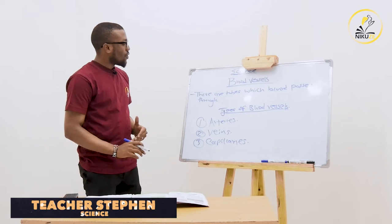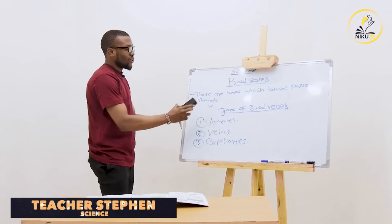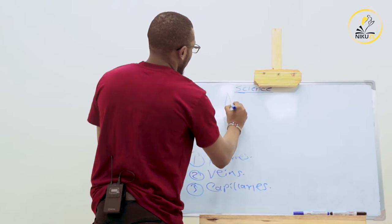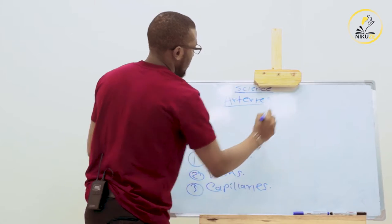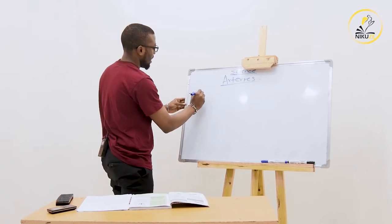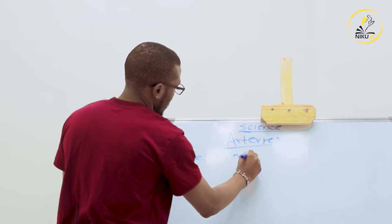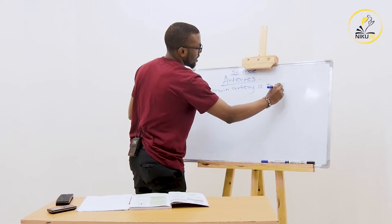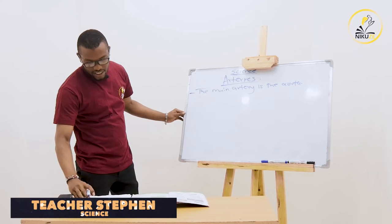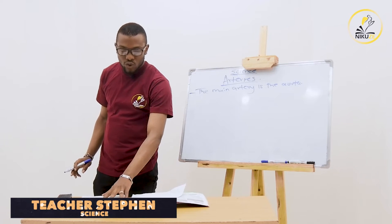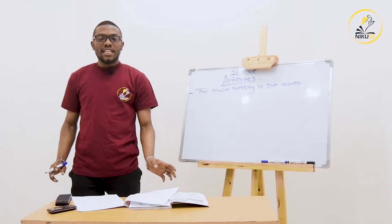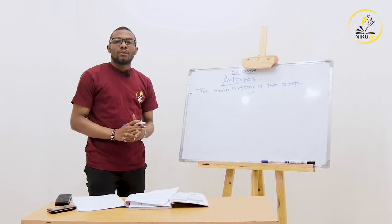Now we are going to look at the arteries in detail. These are the largest blood vessels. The main artery is the aorta. We have other arteries like the pulmonary arteries which we are going to look at when we look at the heart. Remember, arteries carry blood away from the heart. Once the blood has been pumped from the heart it comes with very high pressure to other parts of the body.